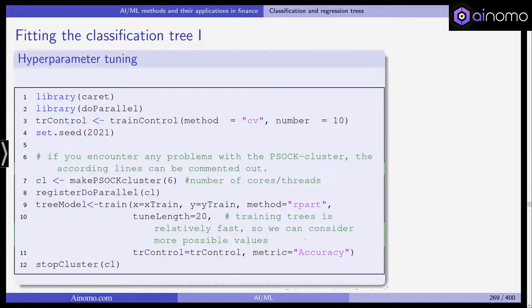Now we fit the classification tree. As is common in many of our machine learning algorithms, we need to select the hyperparameter, which is the parameter that governs the training, the learning process. We use the caret library and we do this in parallel. We use cross-validation. Train control is the function in caret to select the method for hyperparameter training. We do tenfold cross-validation.